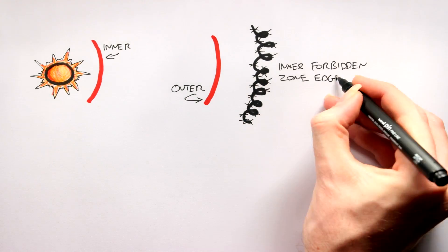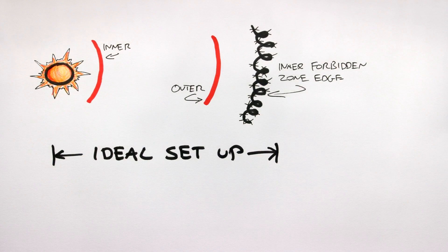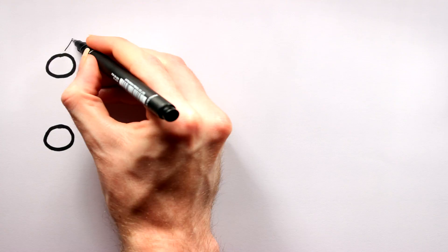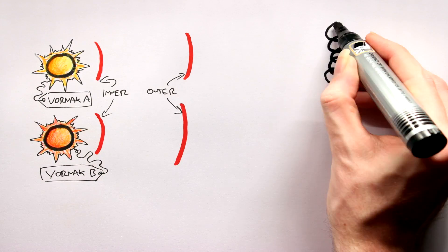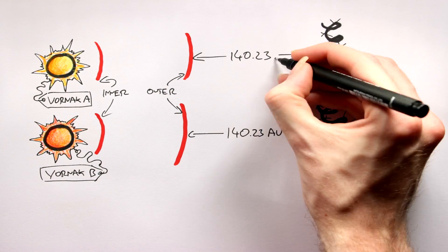For the Vornak system, this inner forbidden zone edge falls at 140.23 AU, well outside the outer limit of both stars, which is ideal and means I can move on to...